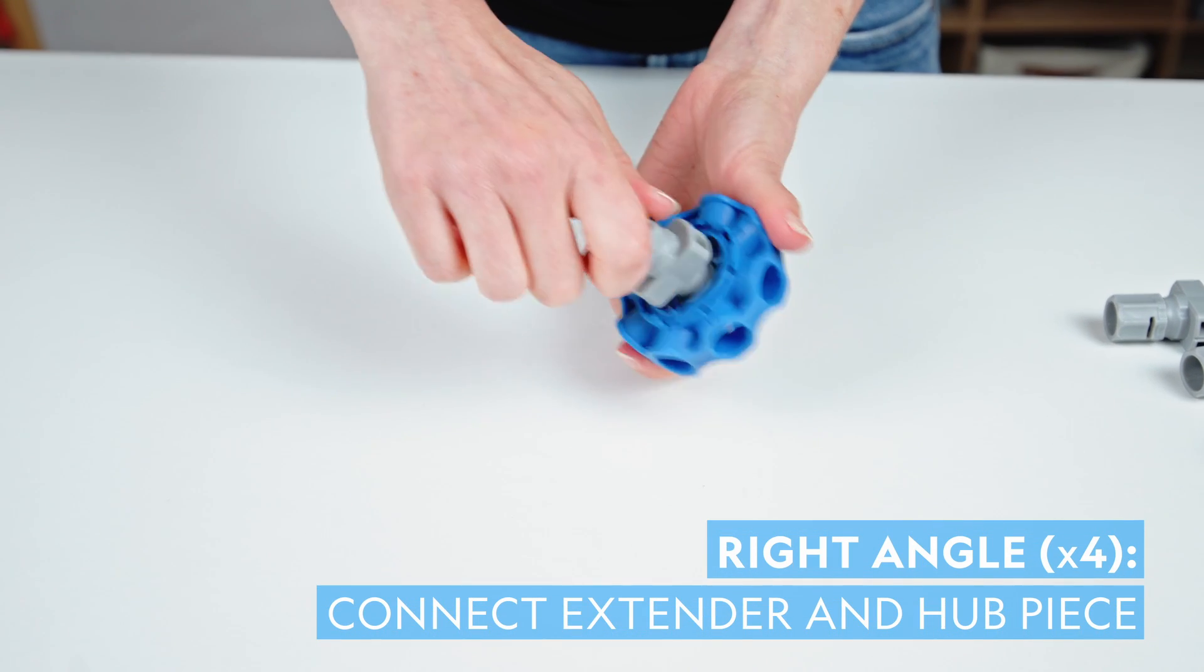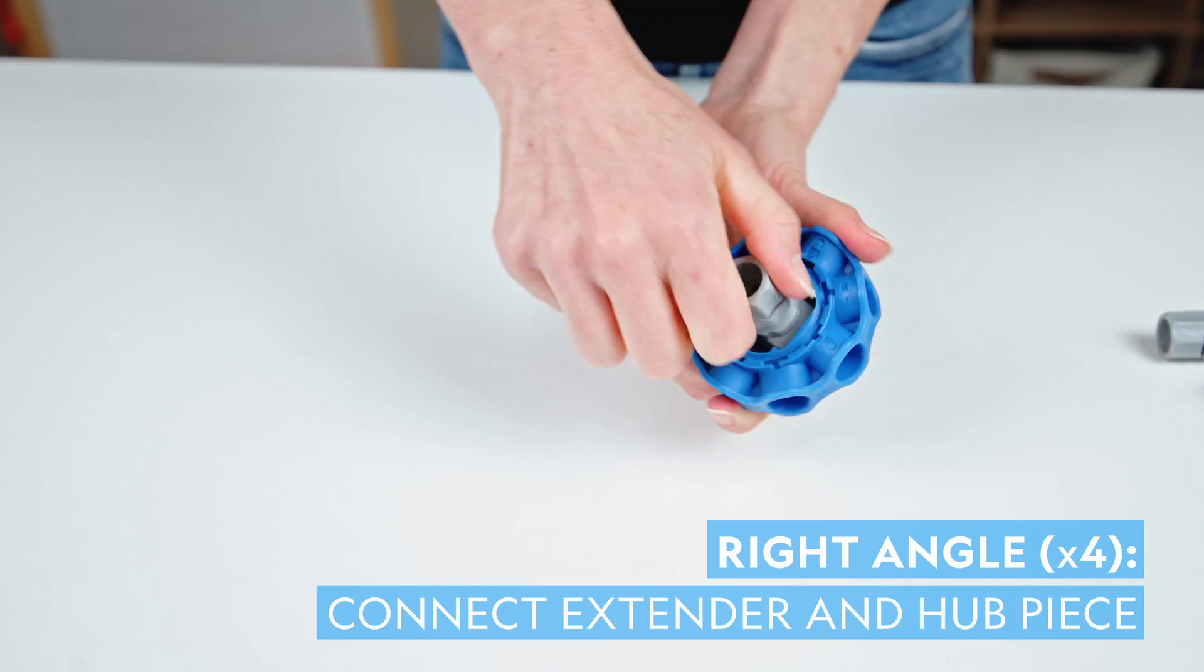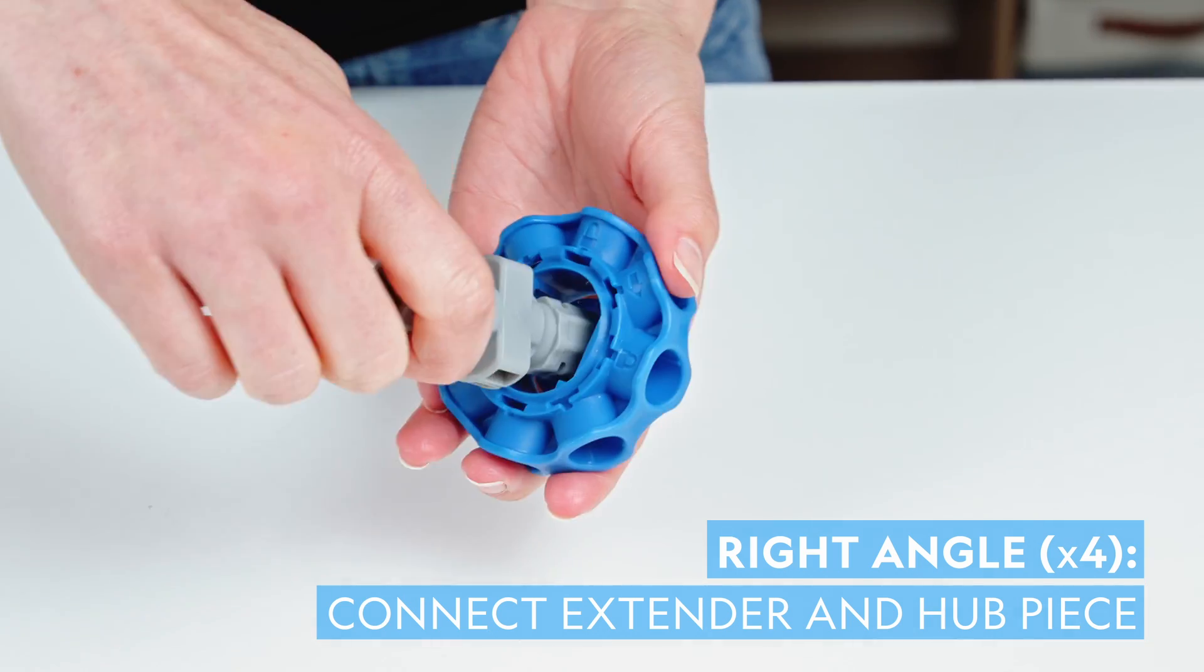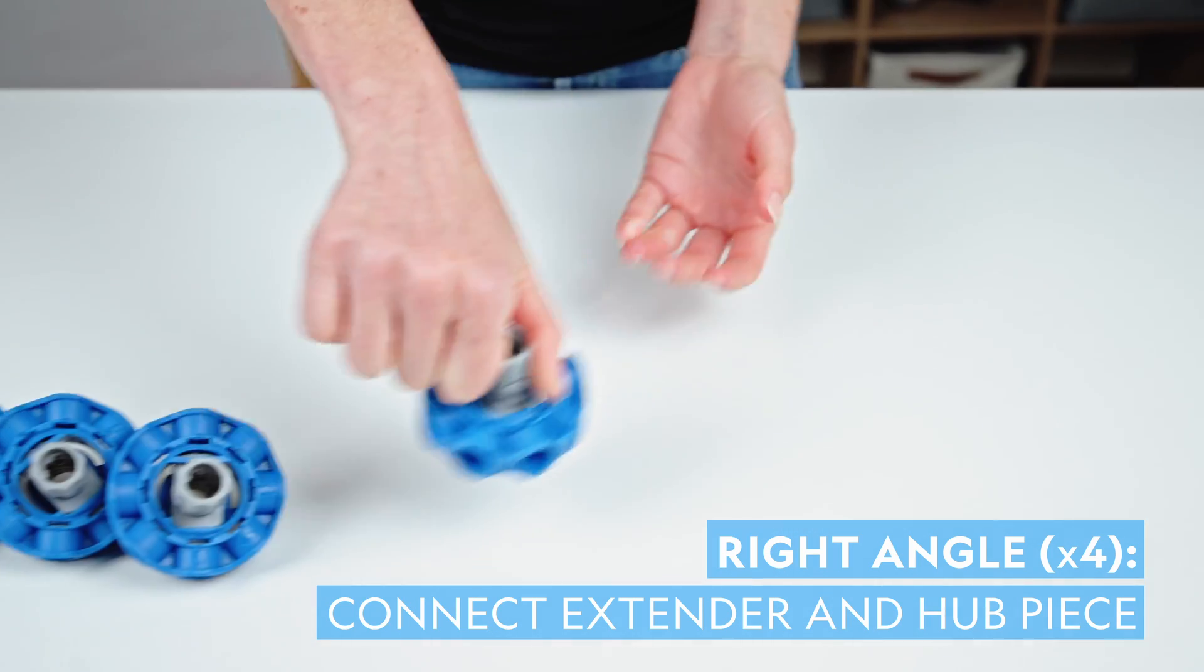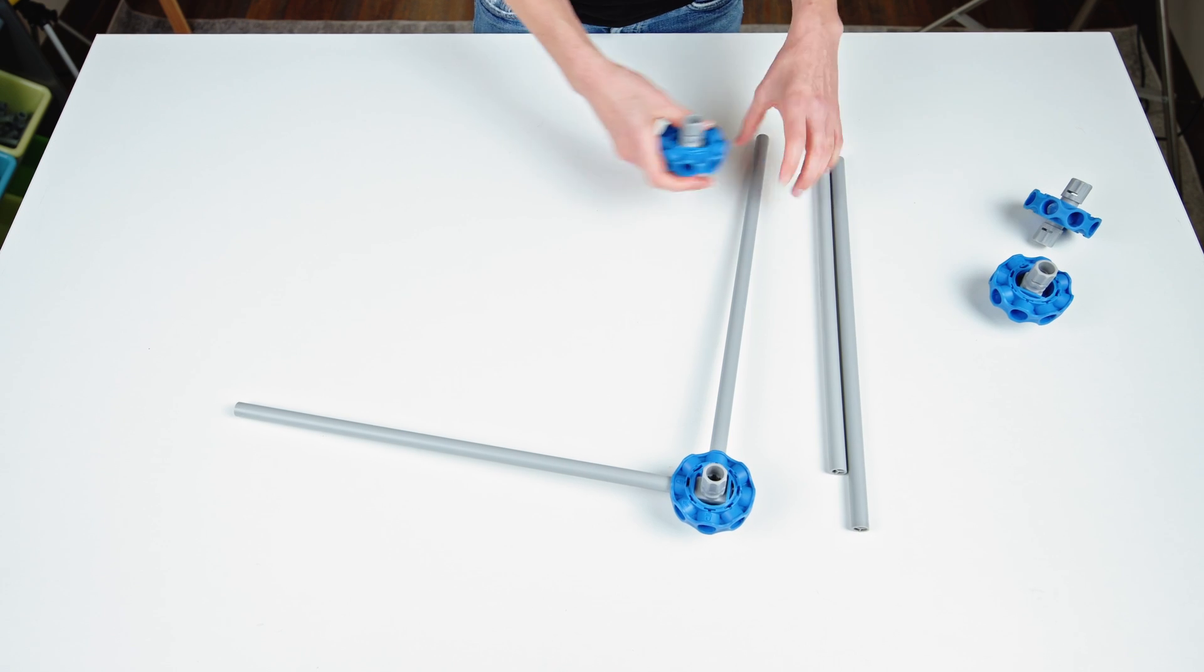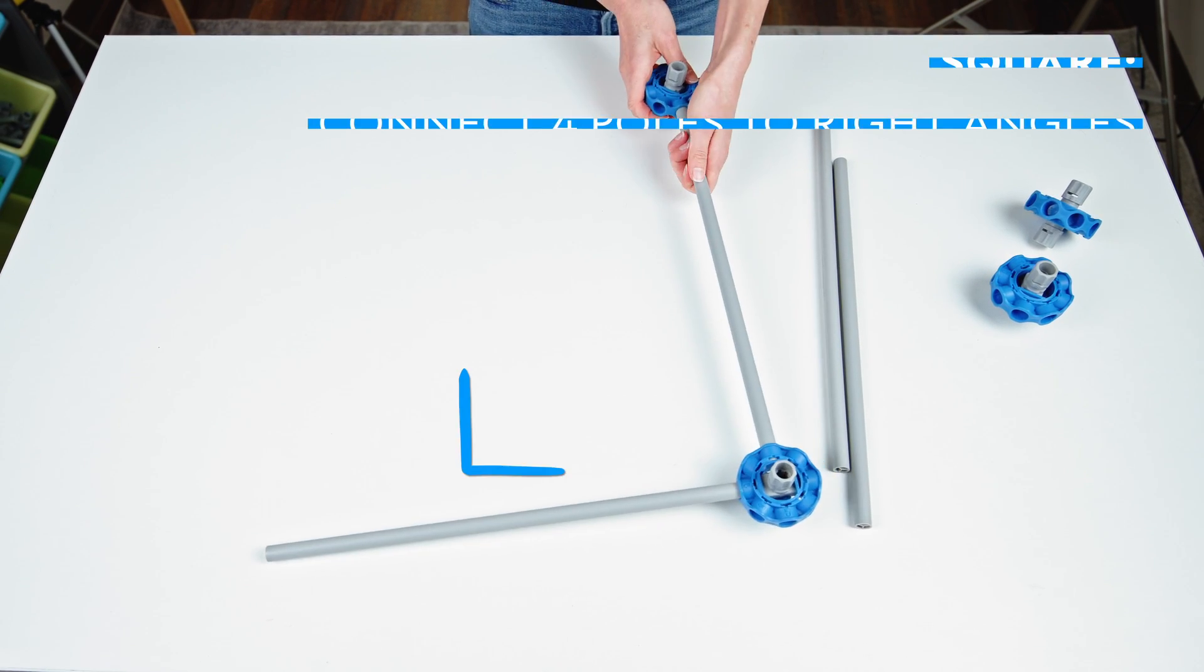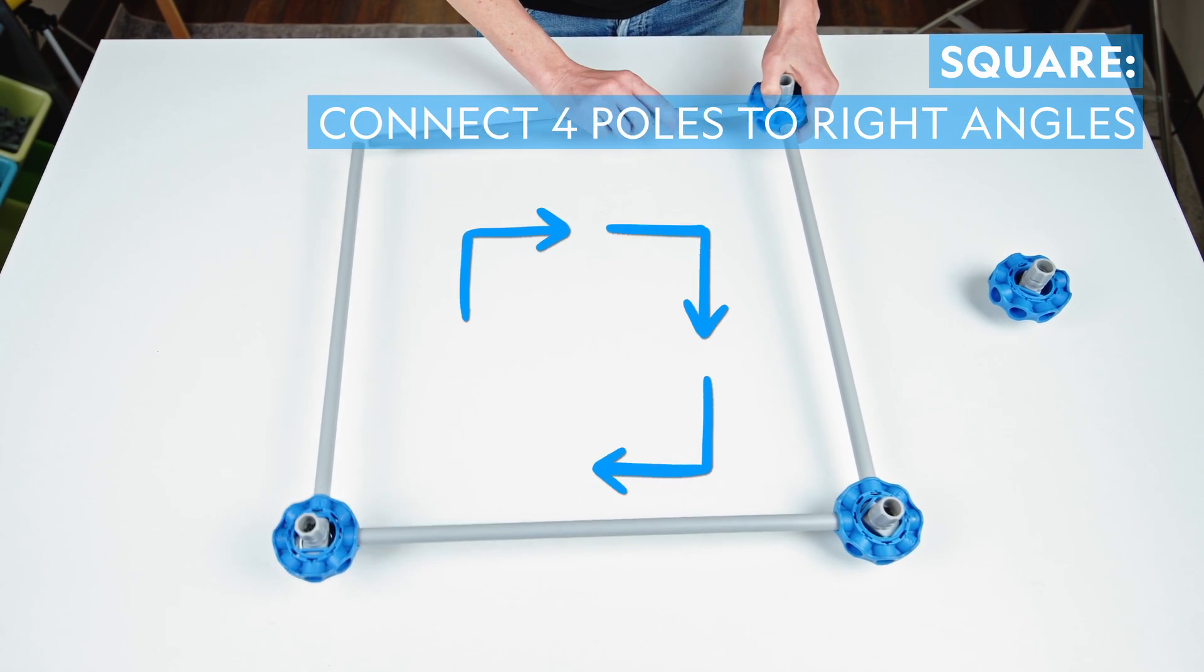Connect your extender and hub piece to make a right angle. Do this three more times to make four right angles. Now, let's make a square. Use four poles to connect the four right angles.